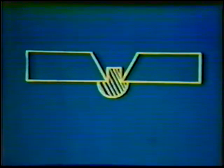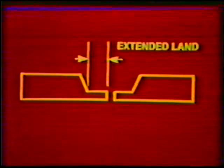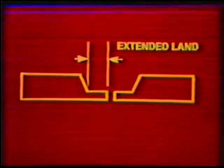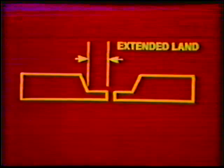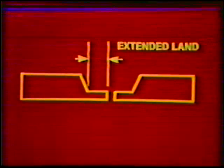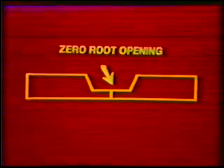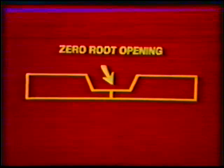When a V-groove weld joint is used with a consumable insert, the root face is normally reduced to zero. When a land is used, it is sometimes extended a small amount from the beveled edge of the joint. By using the extended land, the groove angle can be reduced slightly while accessibility is increased because of the increased width at the root of the joint. When welding with automatic gas tungsten arc equipment, an extended land is commonly used with a zero root opening, so that the root pass can be produced without the addition of filler metal.